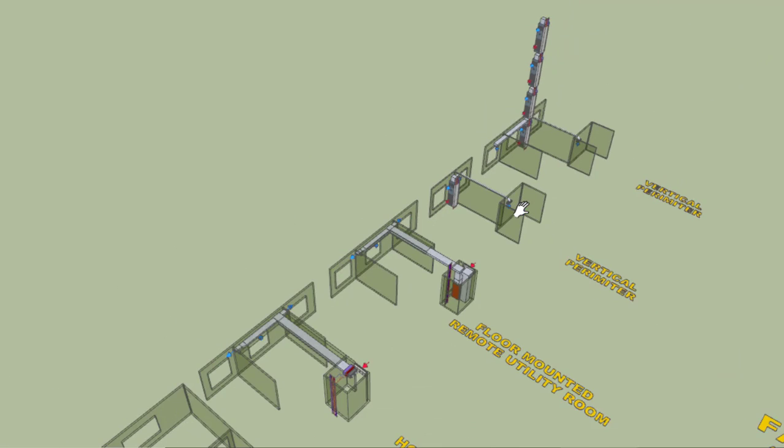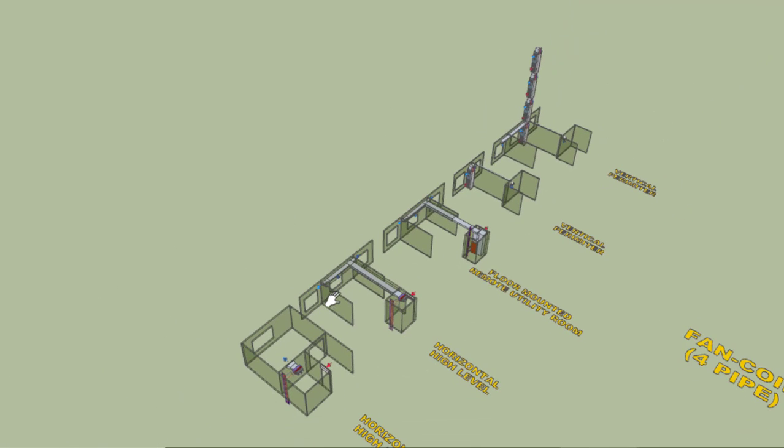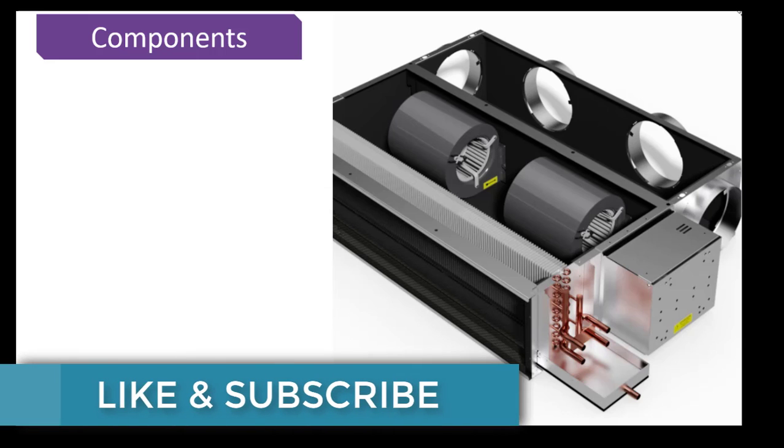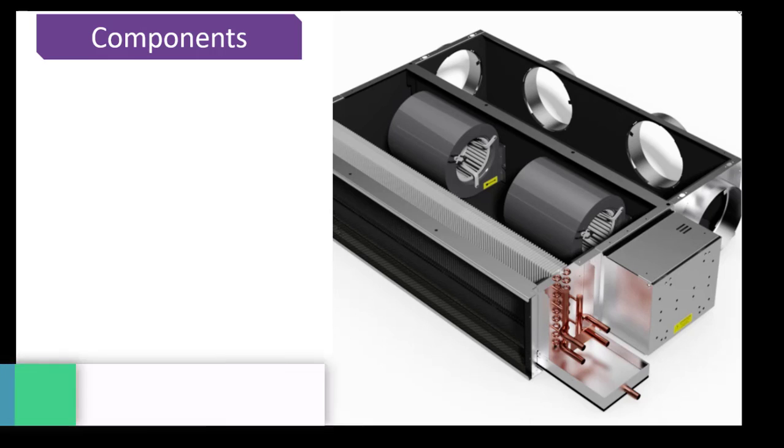So here is how an FCU installation looks like. In commercial buildings mostly concealed type FCUs are used which are installed above the ceilings. So now let's have a look at different components of an FCU.